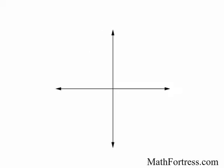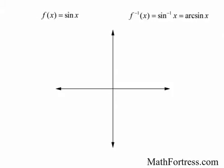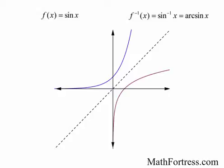Assuming that inverse trigonometric functions are differentiable — and in fact, if f is any one-to-one differentiable function, such as f of x equals sine of x, it can be proved that its inverse, arc sine of x, is also differentiable, except where its tangents are vertical. This is possible because the graph of a differentiable function has no corners or kinks, so if we reflect about the line y equals x, the graph of its inverse function also has no corners or kinks.